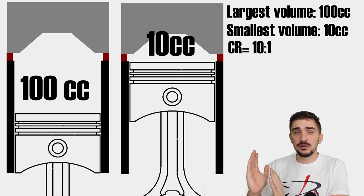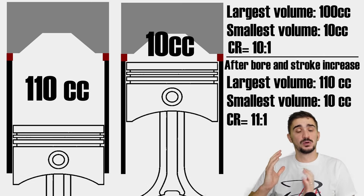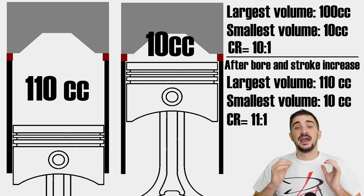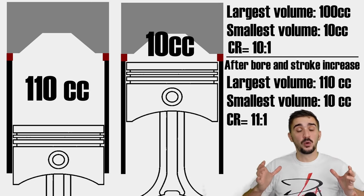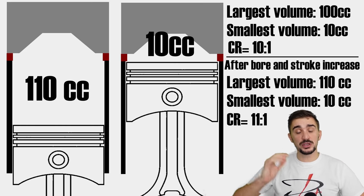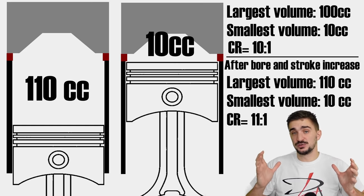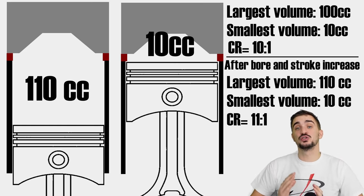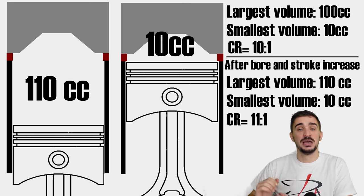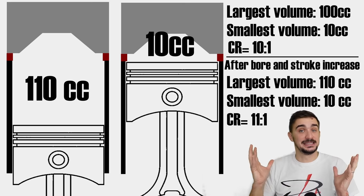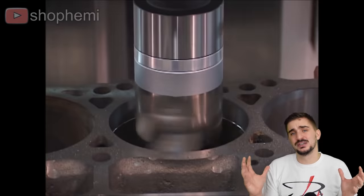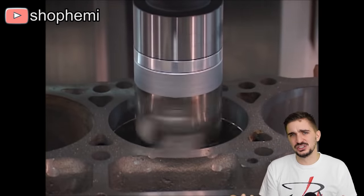Let's start with the bore and stroke of the engine. All other things being equal, increasing the bore and/or stroke will increase the compression ratio. This is because by increasing either the bore or the stroke, you're increasing the largest cylinder volume when the piston is at bottom dead center, while leaving the smallest cylinder volume when the piston is at top dead center untouched.